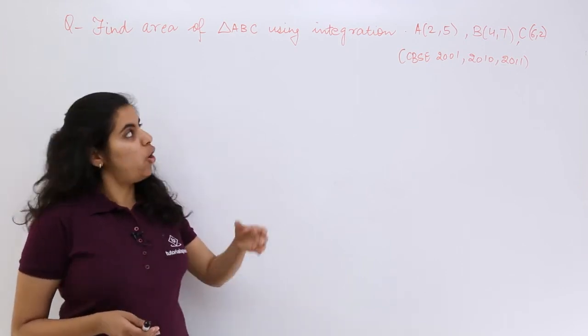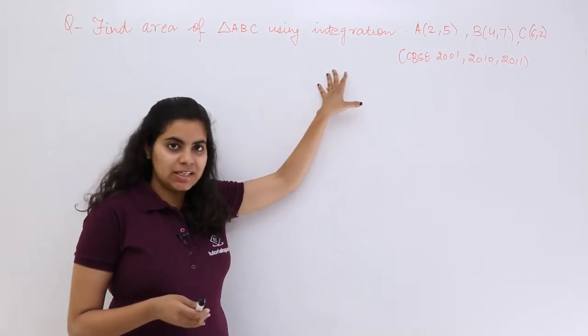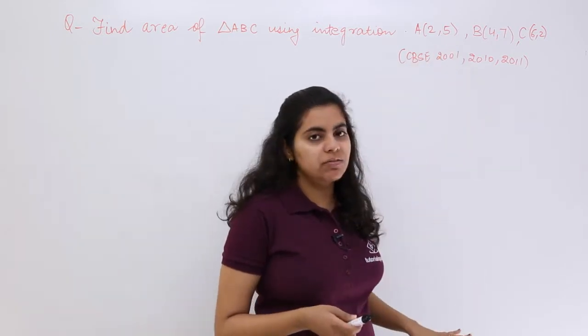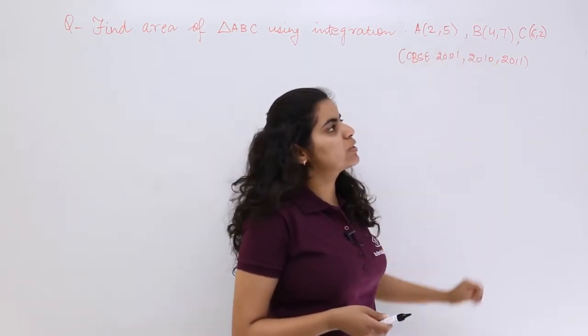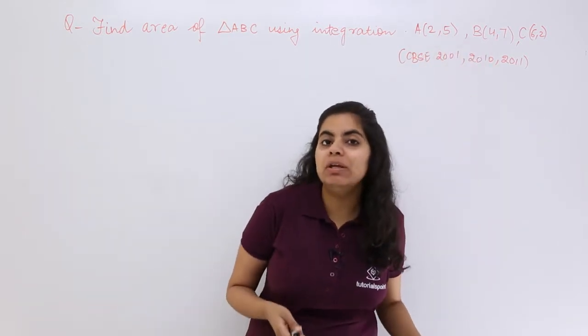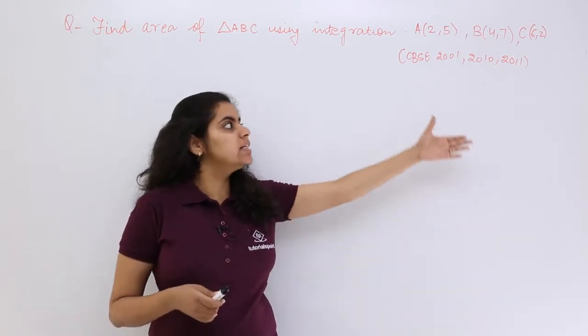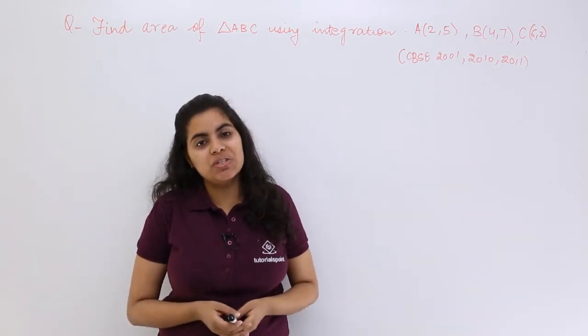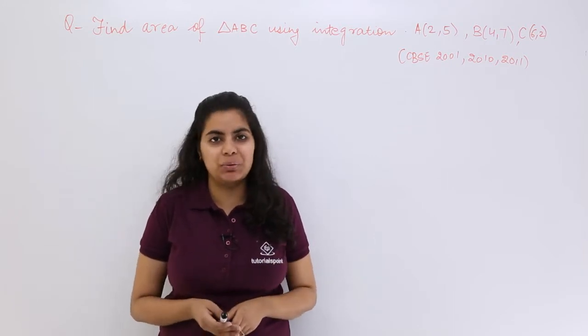The question says find the area of the triangle ABC using integration. Three coordinates are given to us: A is (2,5), B is (4,7), C is (6,2). In which year was this asked? This was asked in the CBSE examination 2001, 2010, 2011 - a very important question.